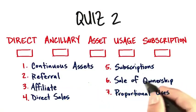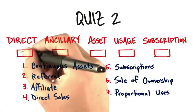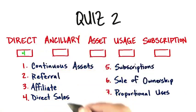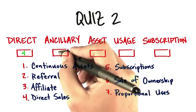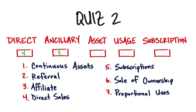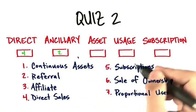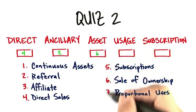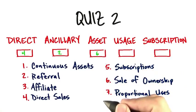So obviously, direct — that would be a direct sales force — number four. Ancillary would be number two, referrer revenue. An example of an asset revenue stream would be number six, sale of ownership.